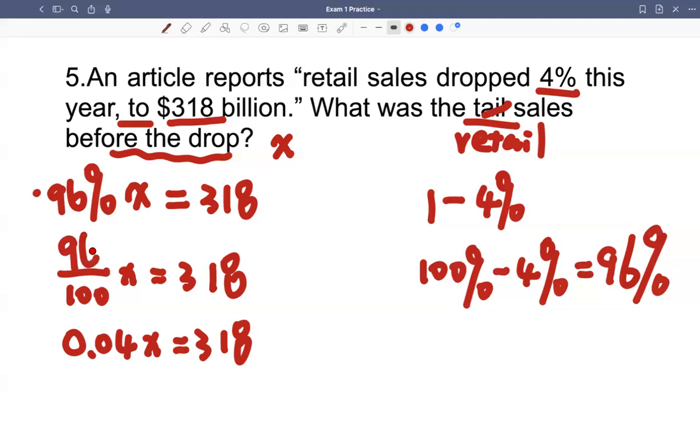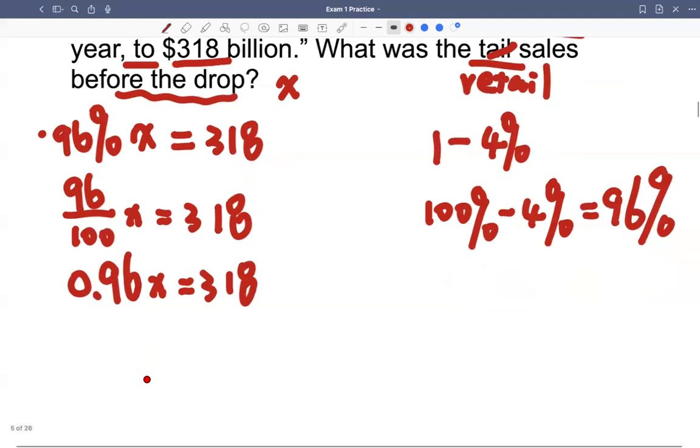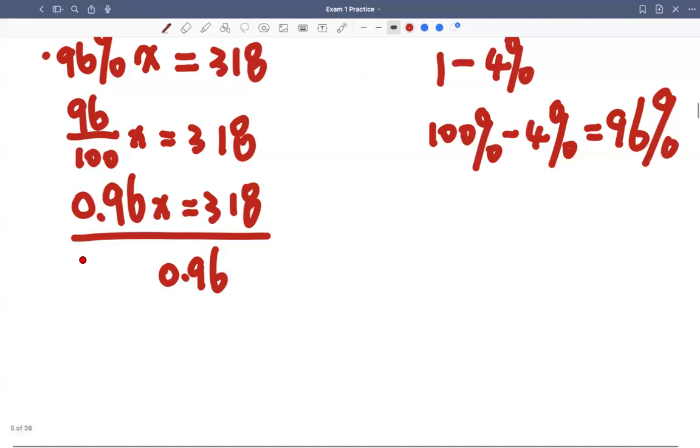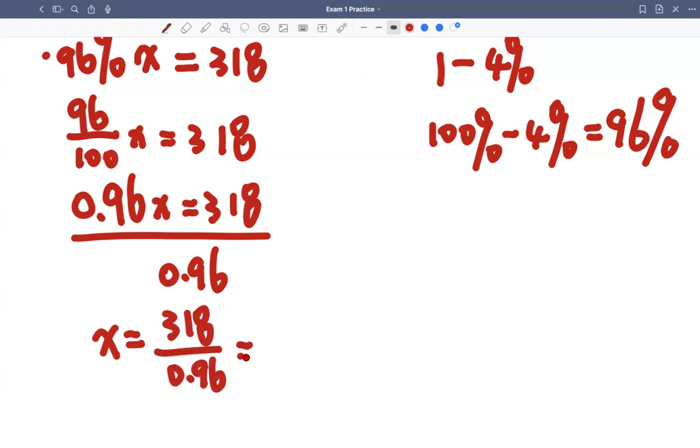So this 0.04 is 0.96. Then we divide both sides by 0.96. Then we use a calculator. So x equals to 318 billion dollars, 318 divided by 0.96. Let me use my calculator to get a number. So 318 divided by 0.96, that's 331.25 billion dollars.